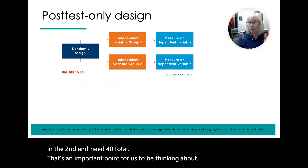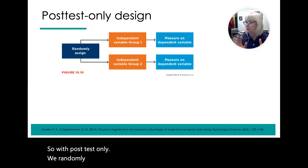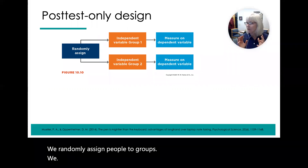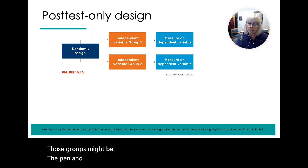With post-test only, we randomly assign people to groups. Those groups might be the pen and the laptop conditions, and then we measure on our outcome variable.